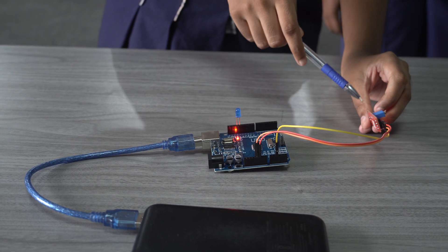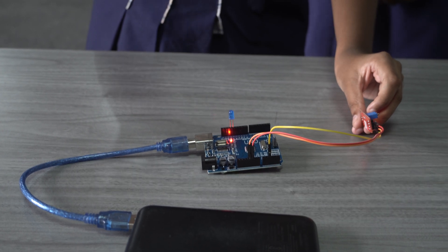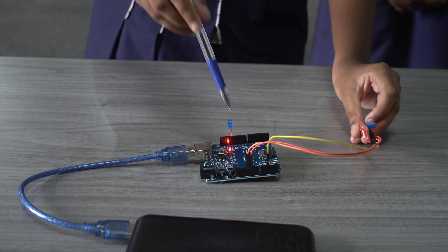Next, we have to connect the digital output of the digital sound sensor to any digital or analog pin on the Arduino board.